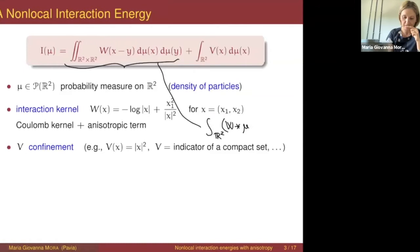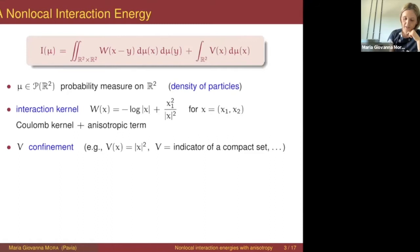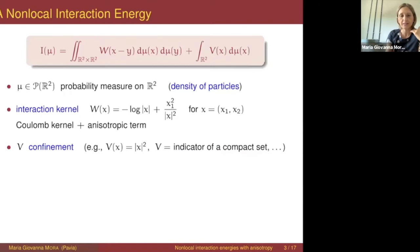The second term of the energy is called the confinement, and it involves a function V which typically goes to infinity at infinity faster than the logarithm. You can think of V as a power law, for instance modulus of x squared, or V could be the indicator function of a compact set — meaning V is zero on a certain compact set and plus infinity outside.